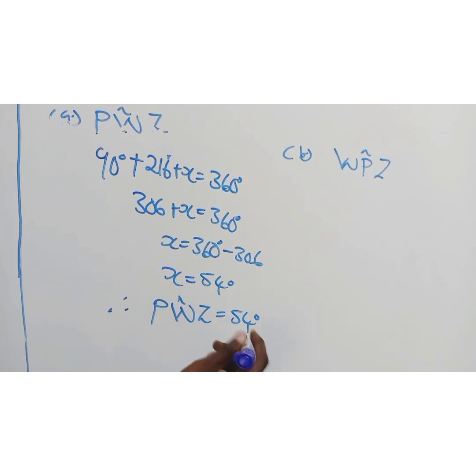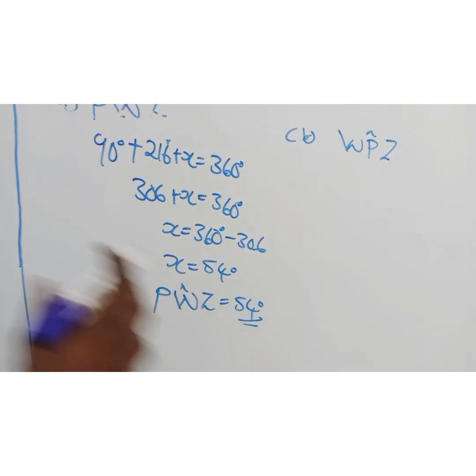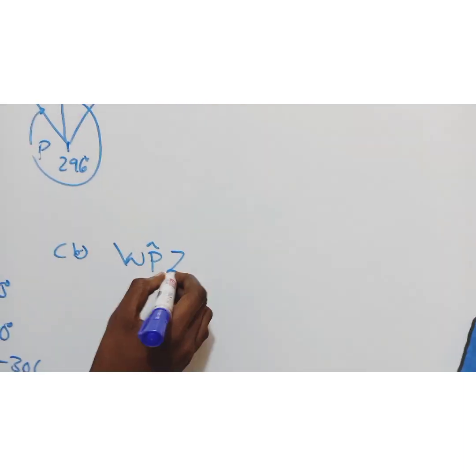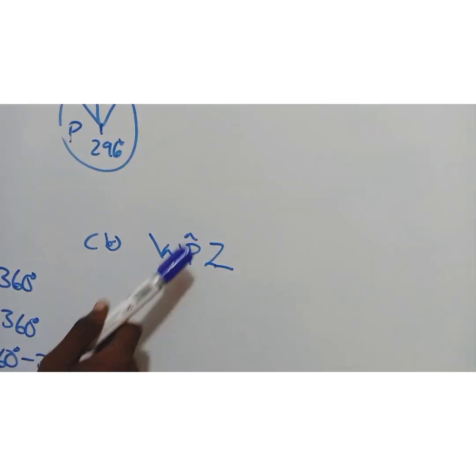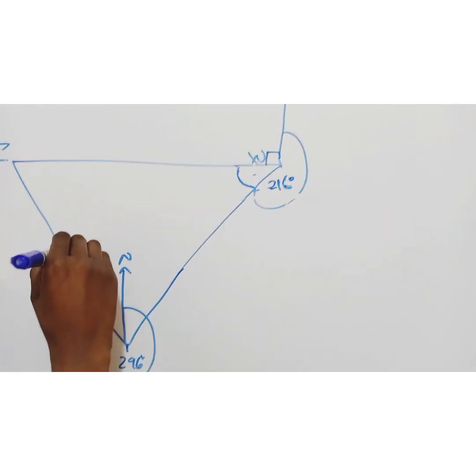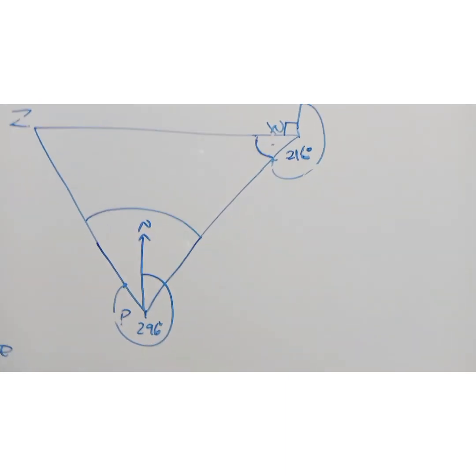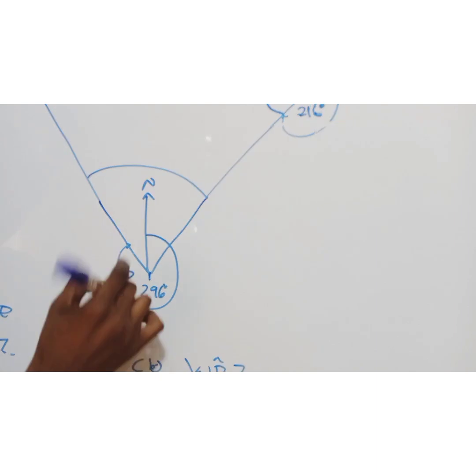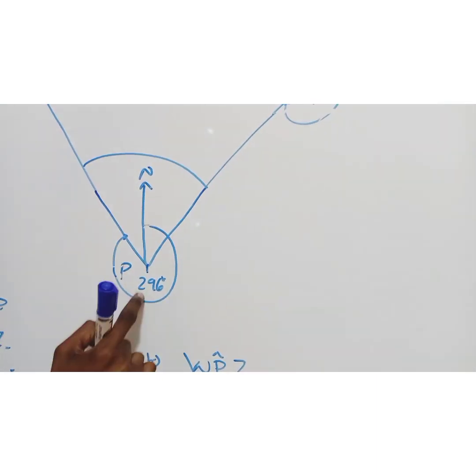Simple as that. Then here, this was the tricky one. They want WPZ, so they want this whole angle here.